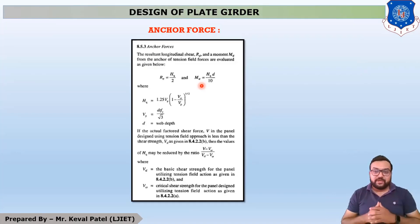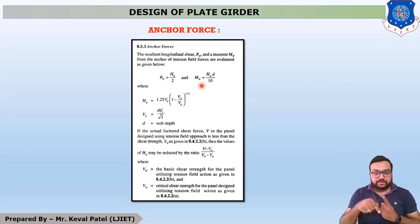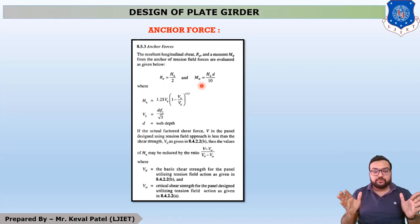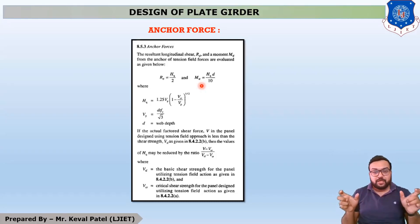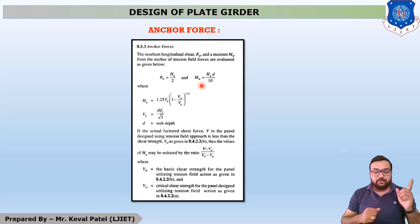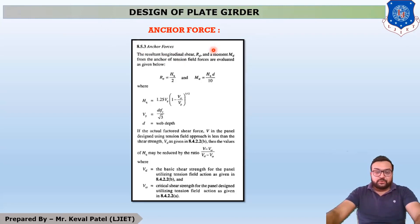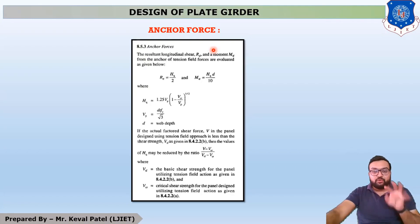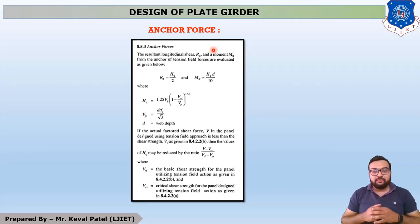The fourth and last check is the anchor force. As discussed, there are two types of stiffeners — vertical and horizontal — and within vertical stiffeners, there are end bearing stiffeners and intermediate stiffeners. The load taken by vertical stiffeners is found using the anchor force. In total, there are four checks to be performed in this chapter.